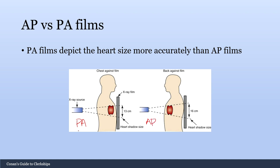PA films are almost always better quality than AP films, and one of the big reasons is that PA films depict heart size more accurately. When shooting a PA film, notice how close the heart is to the radiograph plate, causing a very accurate picture. For the AP film, the heart is detected earlier and ends up getting magnified by the time it hits the plate, which can cause a falsely enlarged heart and can also obscure nearby structures within the lung fields.